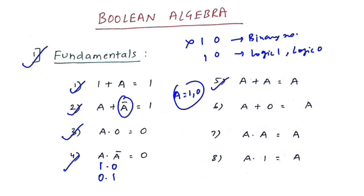Point five: A + A = A — obviously 0+0=0 and 1+1=1. Point six: A + 0 = A. Point seven: A · A = A, because 1·1=1 and 0·0=0. Point eight: A · 1 = A. These were the eight important fundamental points you should know.